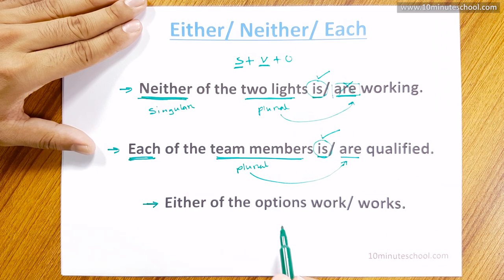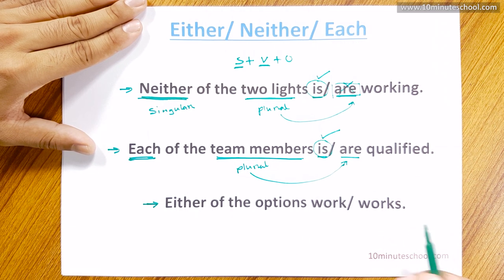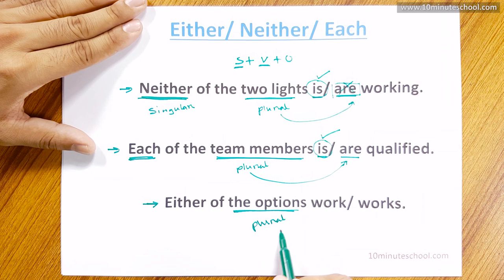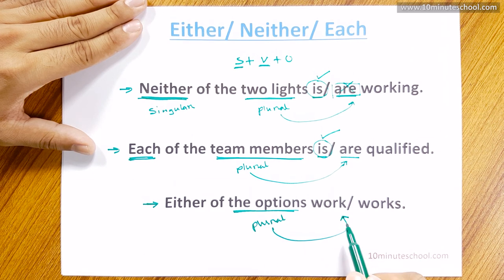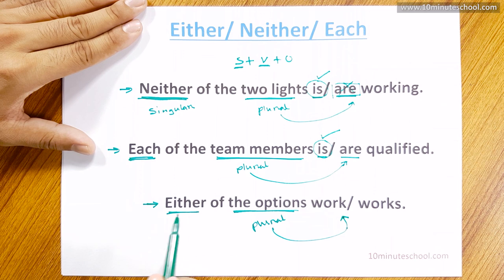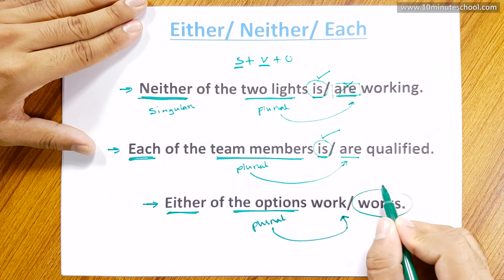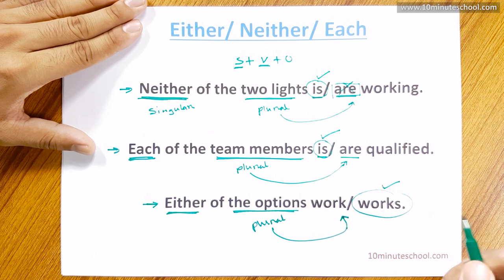Either of the two options works. 'Either' means which one — one of the two options. So this means the right verb is 'works,' which is singular.